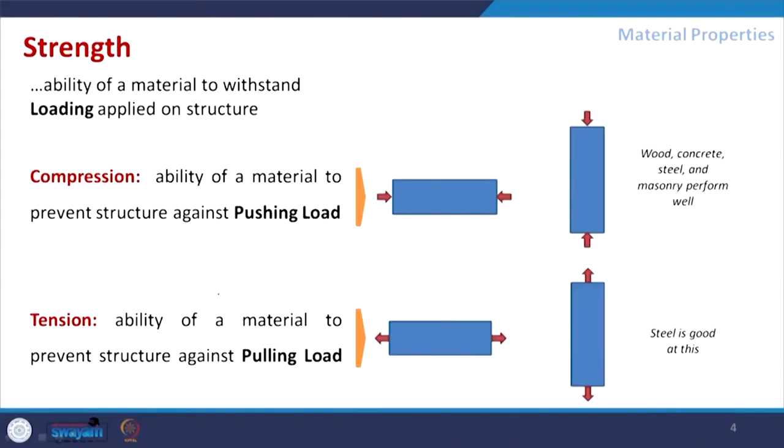Compressive strength is the ability of a material to prevent deformation against a pushing load. Taking the example of a pen — if I push it with my finger, it will try to compress. For tension, it is the pulling force — if we try to pull the pen apart, that is the pulling load. Depending on the material and its physical characteristics, the limit of resistance against compression or tension will vary.